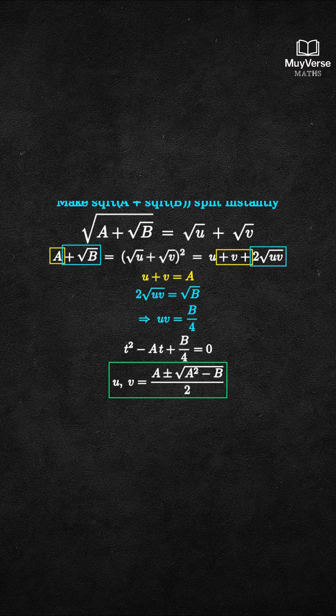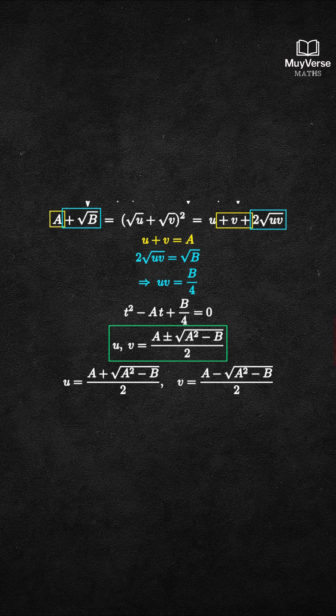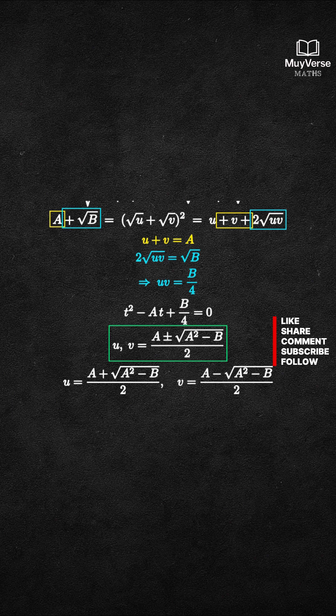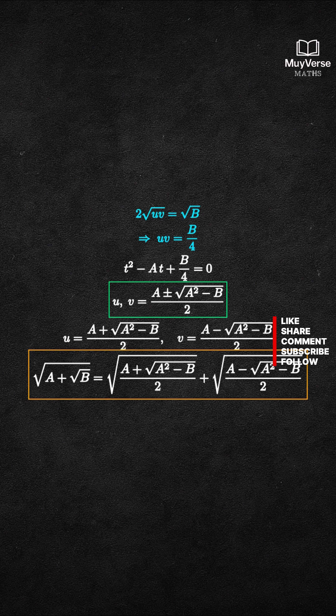Choose the ordering so both are non-negative. Let u equal a plus square root of a squared minus b all over 2 and v equal a minus square root of a squared minus b all over 2. Now plug back into the split. This gives the boxed two-term formula for square root of a plus square root of b.